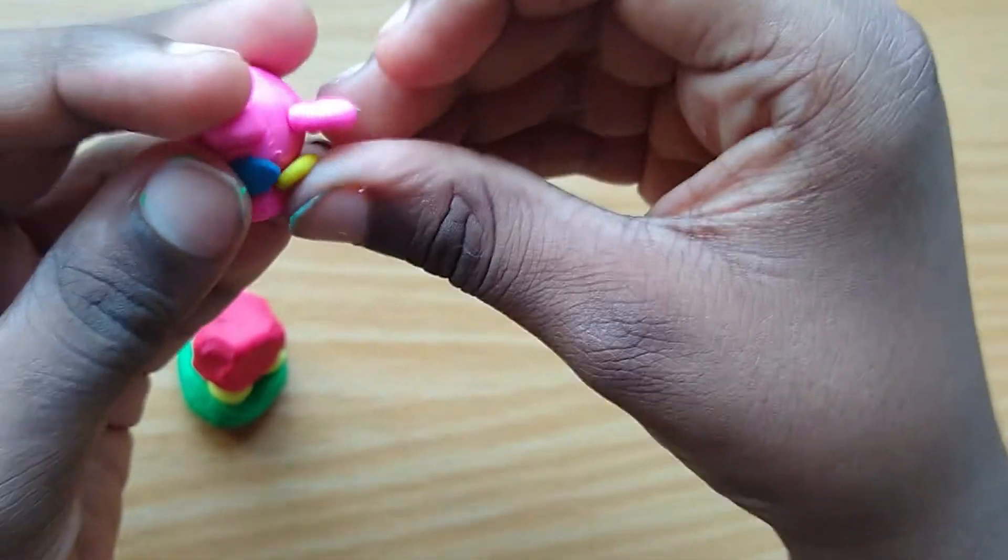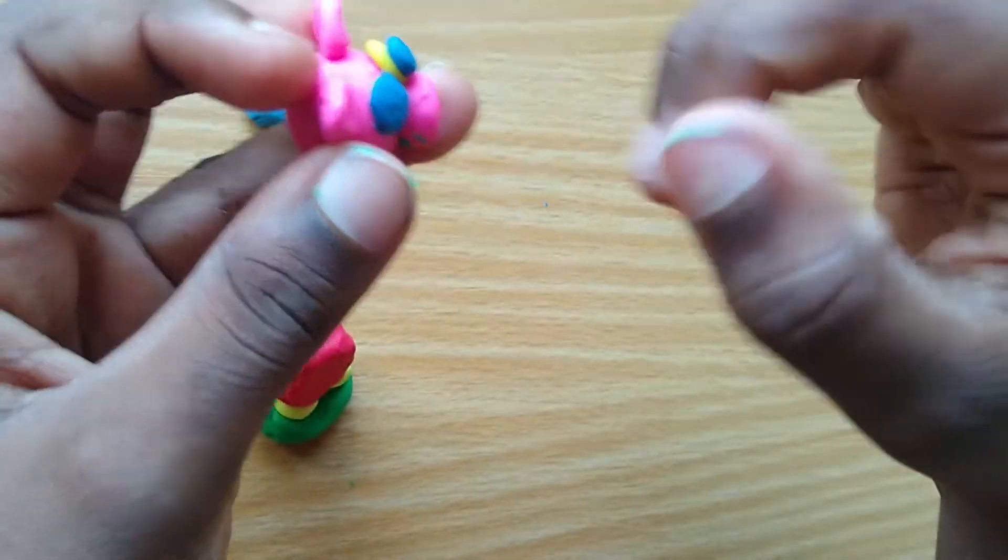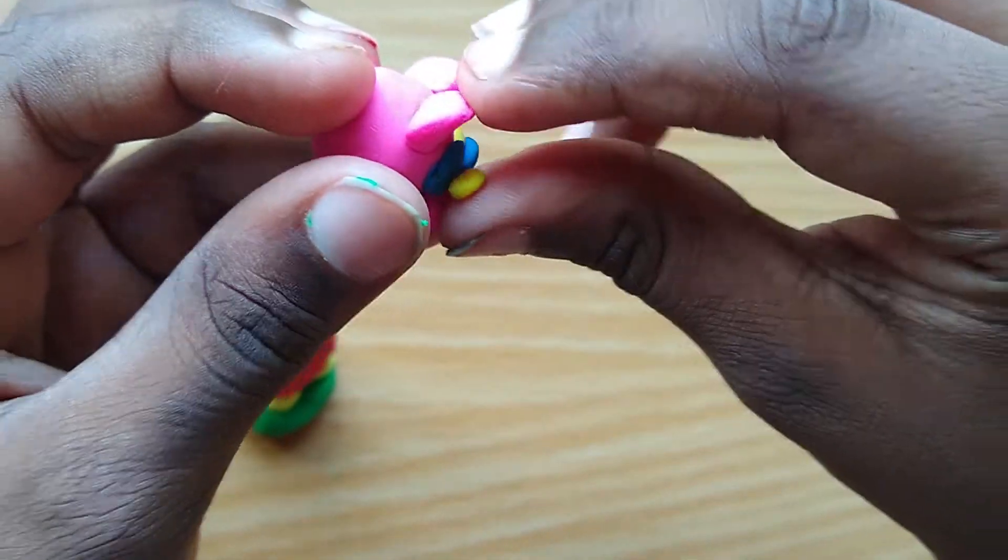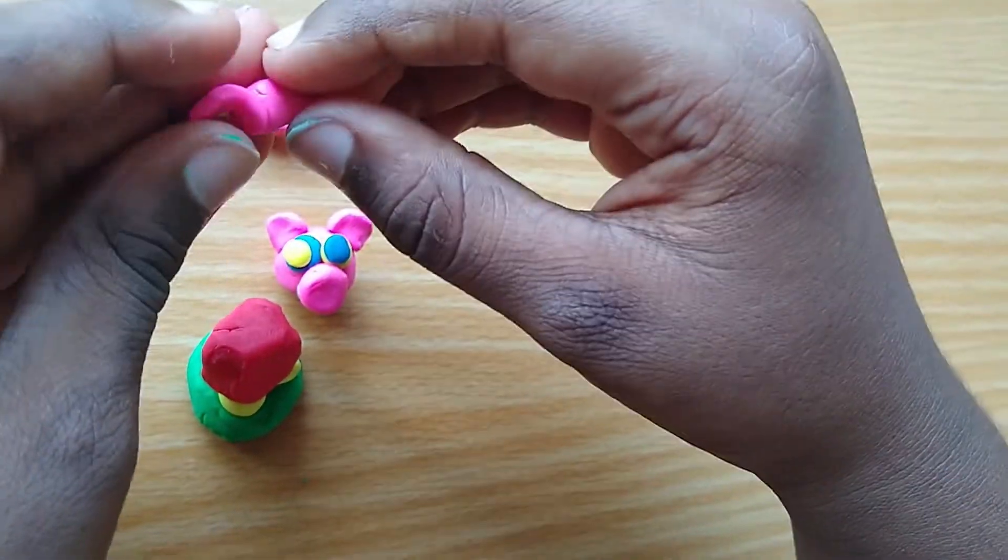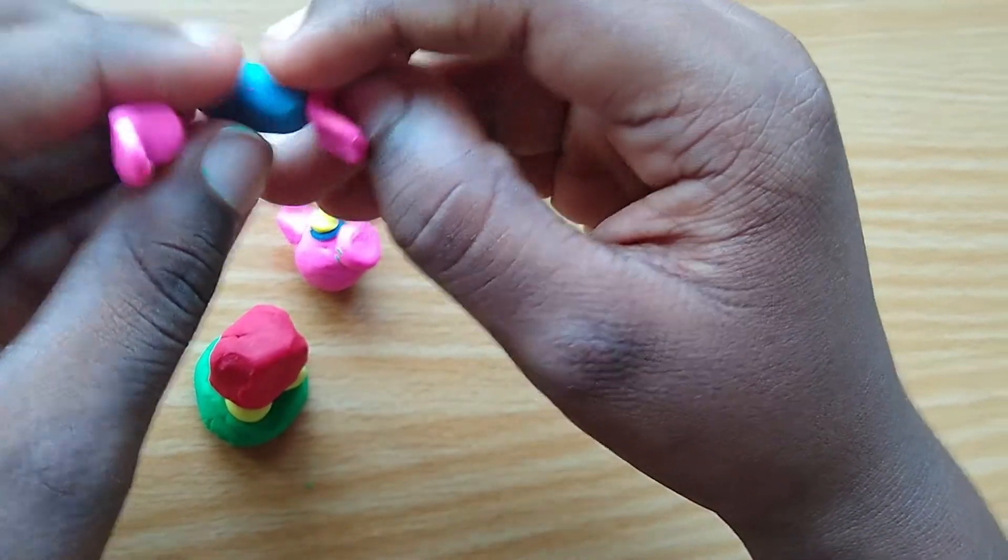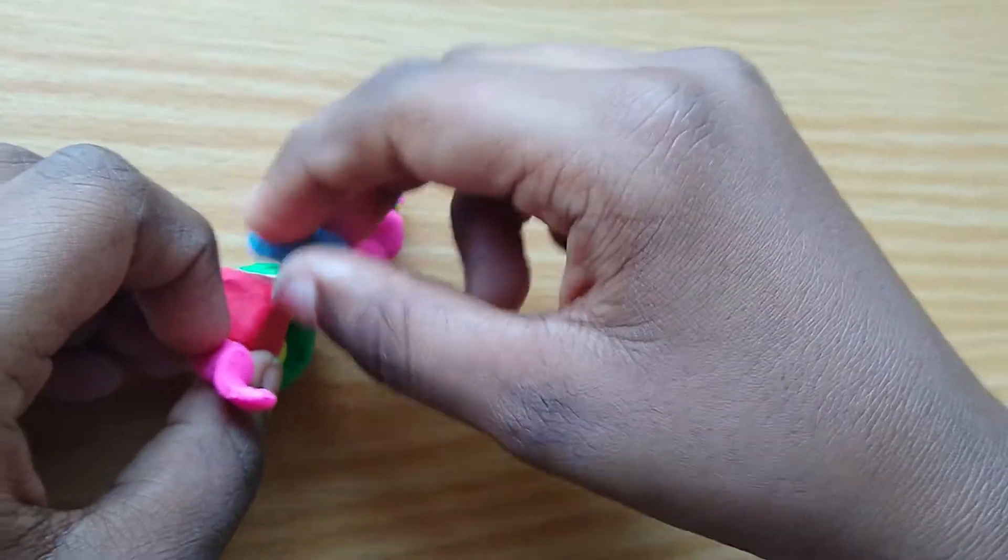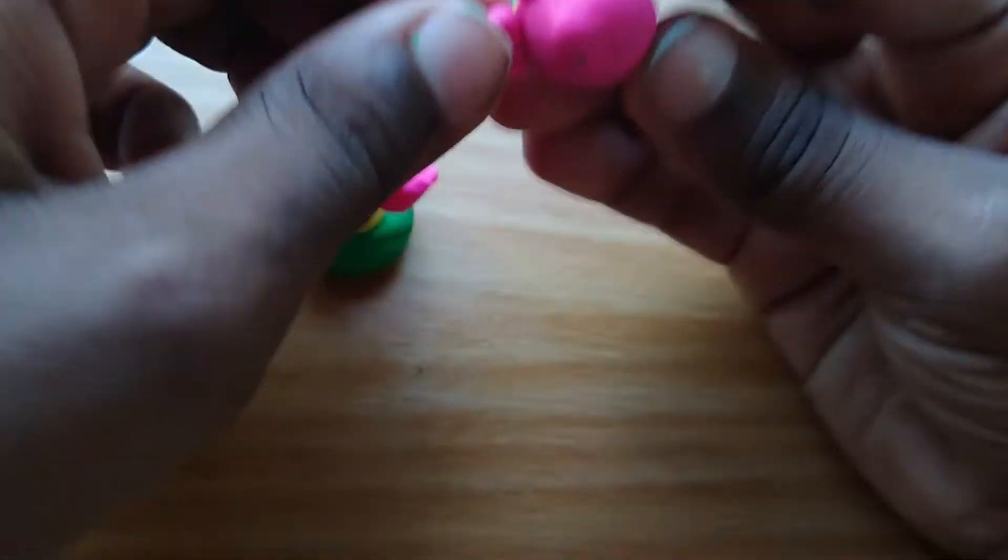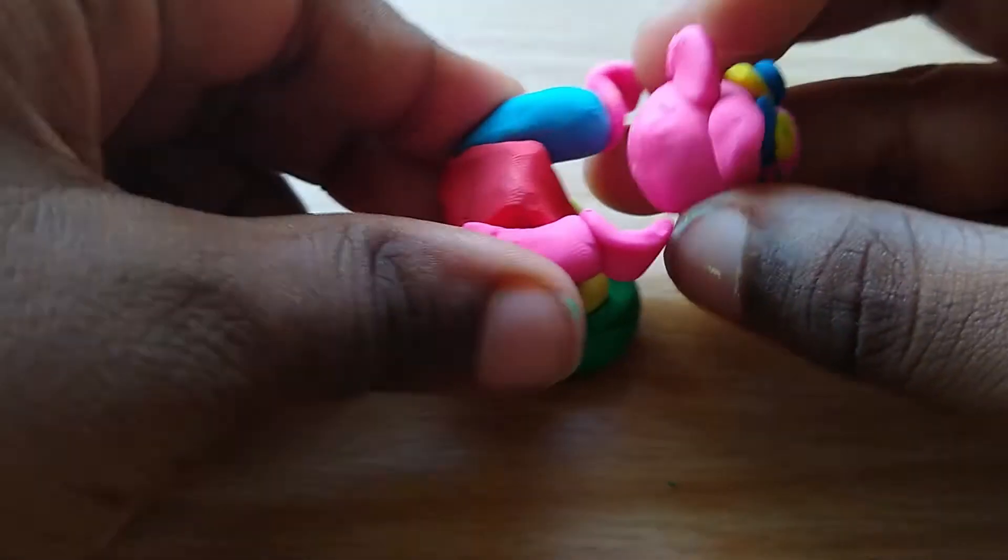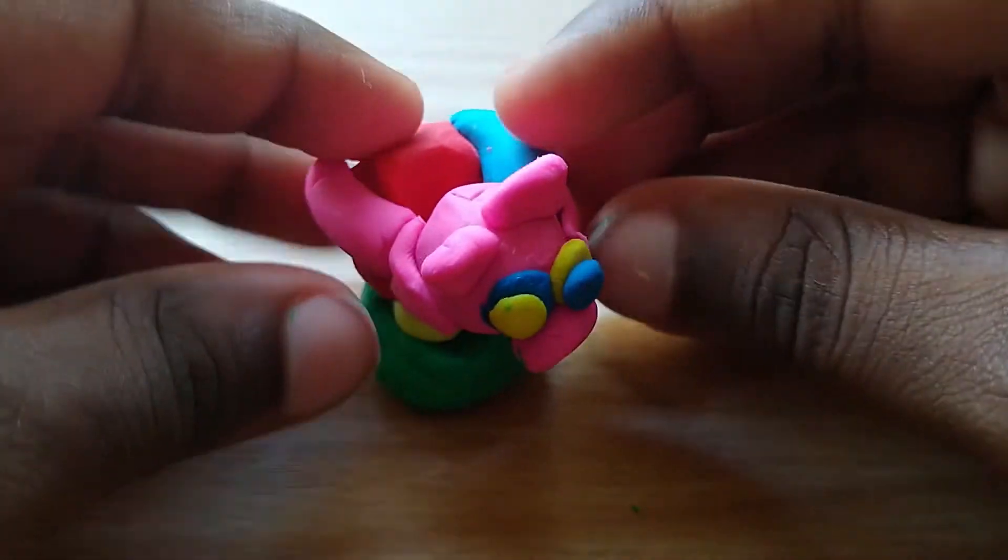And then you put another blue in this yellow eye and put a yellow in the blue eye. Then you open these hands just like this and then fold it out just like this. His ear can fall, but then you make him hold the head and that's how you make my custom character.